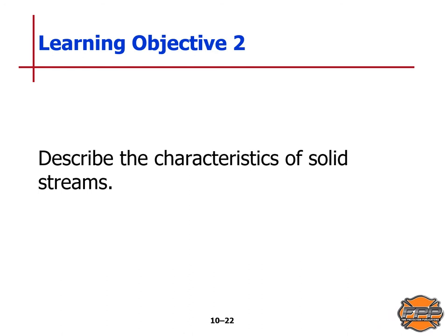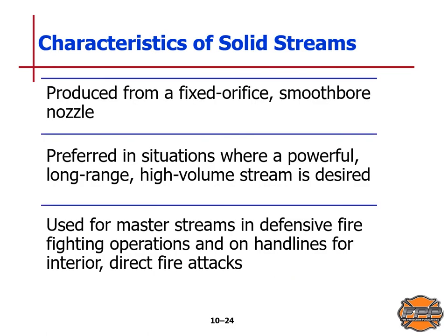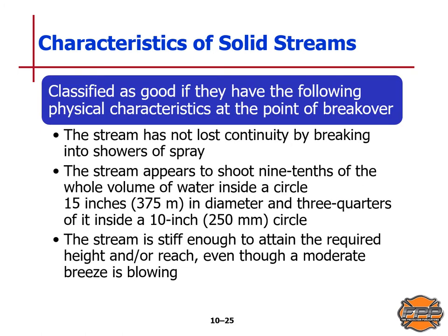Learning objective two: describe the characteristics of solid streams. The oldest type of fire stream dates back to the very origins of the fire service. It's easiest to produce and requires the simplest type of nozzle. Solid streams are produced from a fixed orifice smoothbore nozzle and are preferred in situations where a powerful, long-range, high-volume stream is desired. The characteristics of solid streams are classified as good if they have certain physical characteristics at the point of breakover.